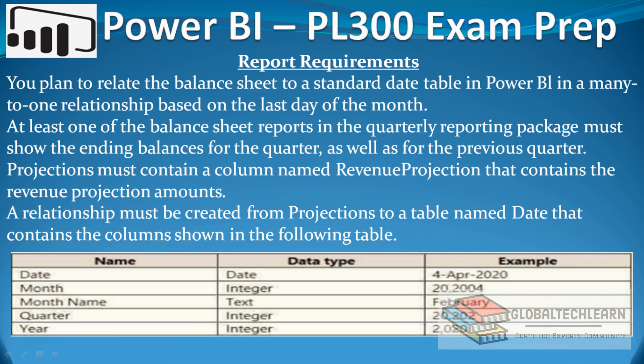Under reporting requirements, the plan is to relate the balance sheet to a standard date table in Power BI in a many-to-one relationship based on the last day of the month. At least one of the balance sheet reports in the quarterly reporting package must show the ending balances for the quarter as well as for the previous quarter. Projections must contain a column named Revenue Projection that contains the revenue projection amounts. A relationship must be created for projections to a table named Date that contains the specified columns.